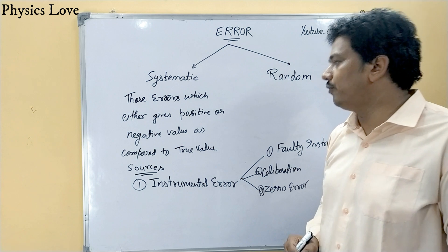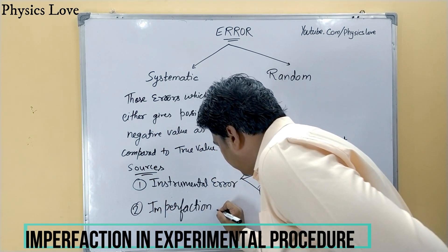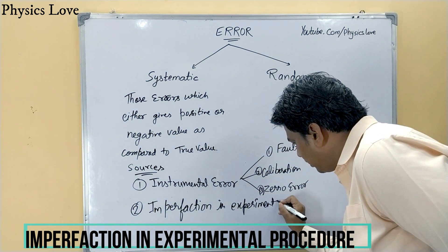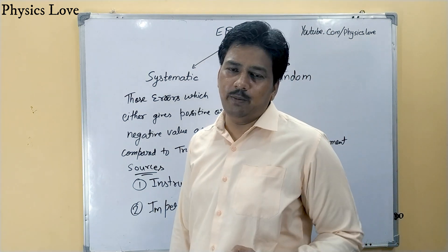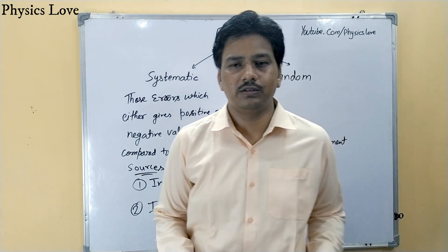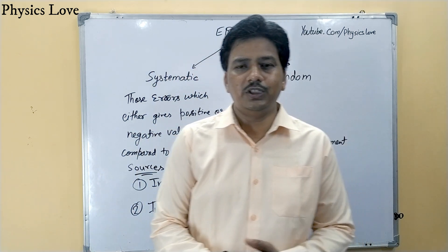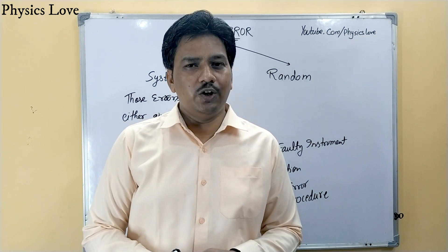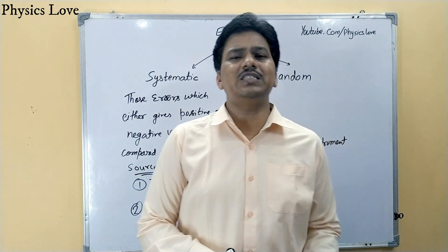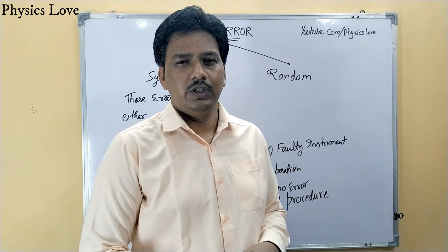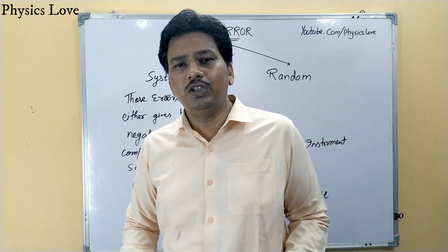The second source of systematic error is imperfection in experimental procedure or technique. When your method of performing the experiment is not correct, such errors will occur. For example, if you measure body temperature by placing the thermometer under the armpit — which is a common practice — it will always give you a lesser value than the actual body temperature. This wrong experimental technique causes a systematic error.